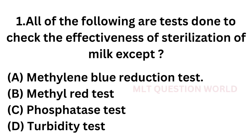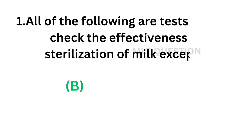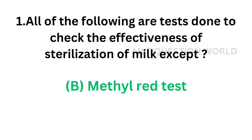Question number one: All of the following are tests done to check the effectiveness of sterilization of milk, except — Option A: Methylene blue reduction test, Option B: Methyl red test, Option C: Phosphatase test, Option D: Turbidity test. The correct answer is Option B — Methyl red test. Methyl red test is not used to check the effectiveness of sterilization of milk.